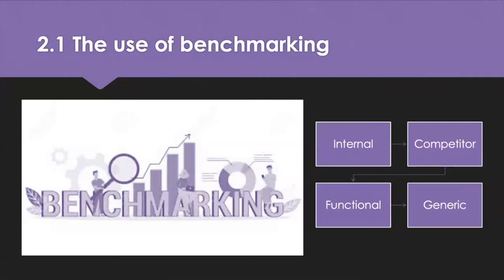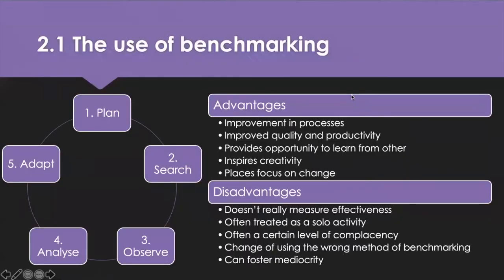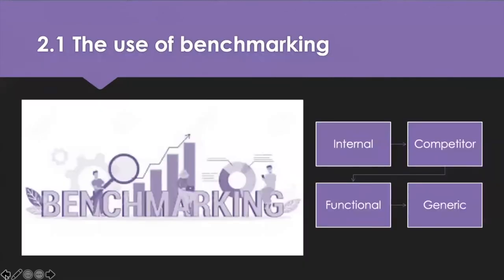There are four types of benchmarking. Internal benchmarking is mainly used in large corporations that have different units of production or services. It compares performance of a unit within an organisation with that of another high performing unit. If one unit is performing better than others, practices can be transferred to other units for improvement. Competitor benchmarking compares key areas of an organisation with key areas of high performing organisations, usually in a competitive industry.